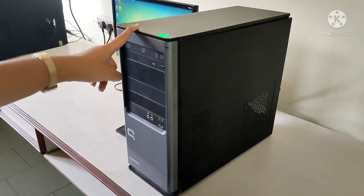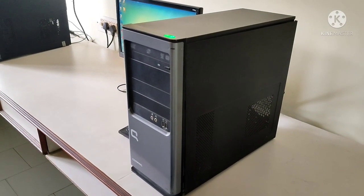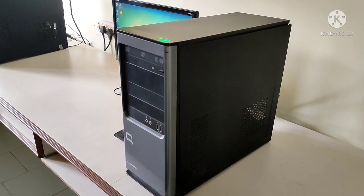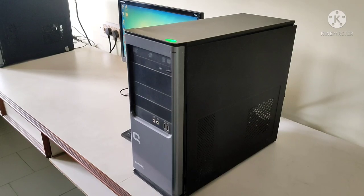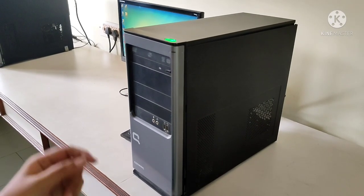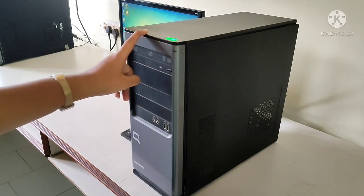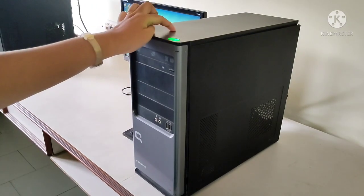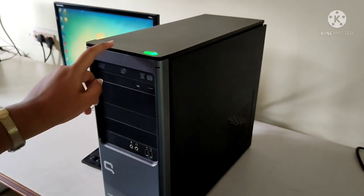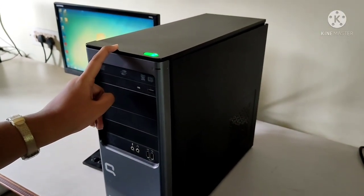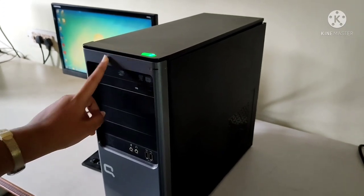CPU is also called the brain of the computer. In the previous lesson, we have learnt this. It is in the form of a small chip. That chip is located inside of this box. This CPU helps the computer to work according to the given commands.